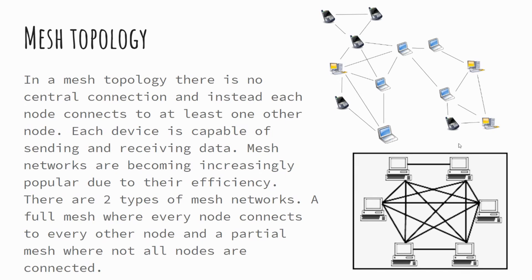In a mesh topology, devices generally have at least one or more connections. We have two examples: a partial mesh and a full mesh. In a partial mesh, not every device is connected to every other device, but they generally have at least two connections, meaning data has multiple routes it can travel through. In a full mesh network, every device has a direct connection to every other device. Mesh networks are great because if a single device fails, you can still transfer data around the network without much issue.